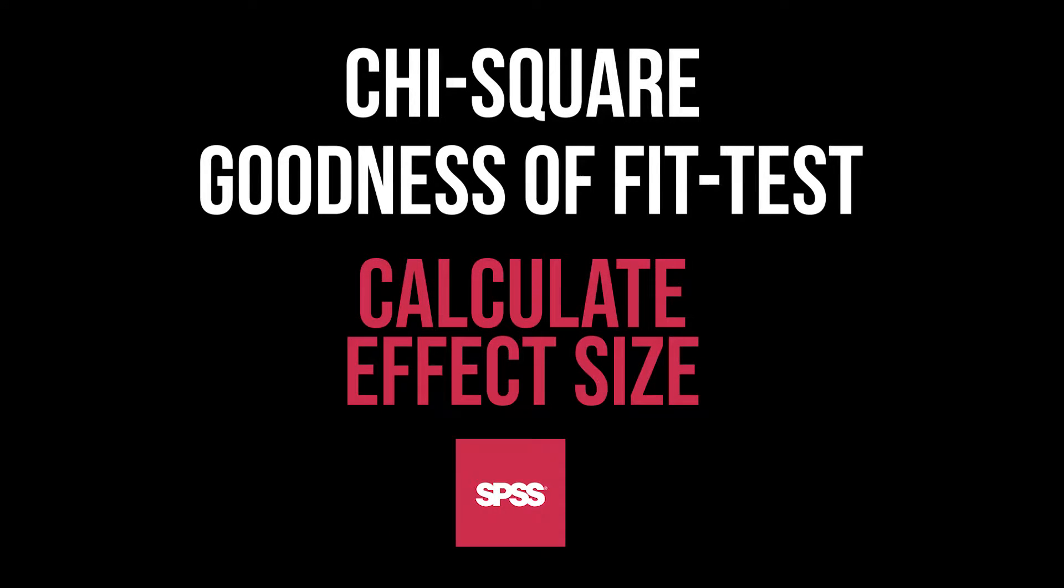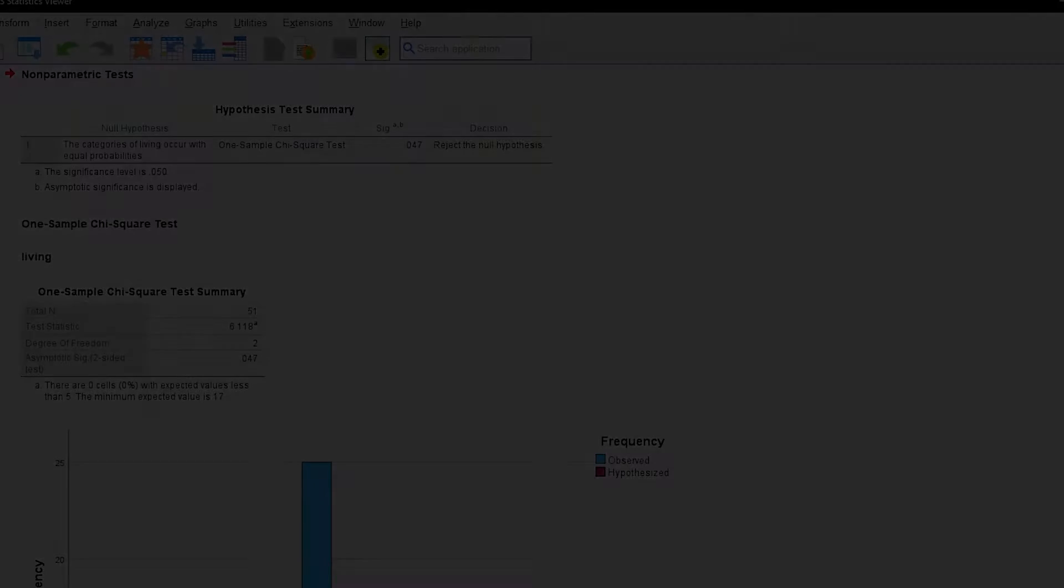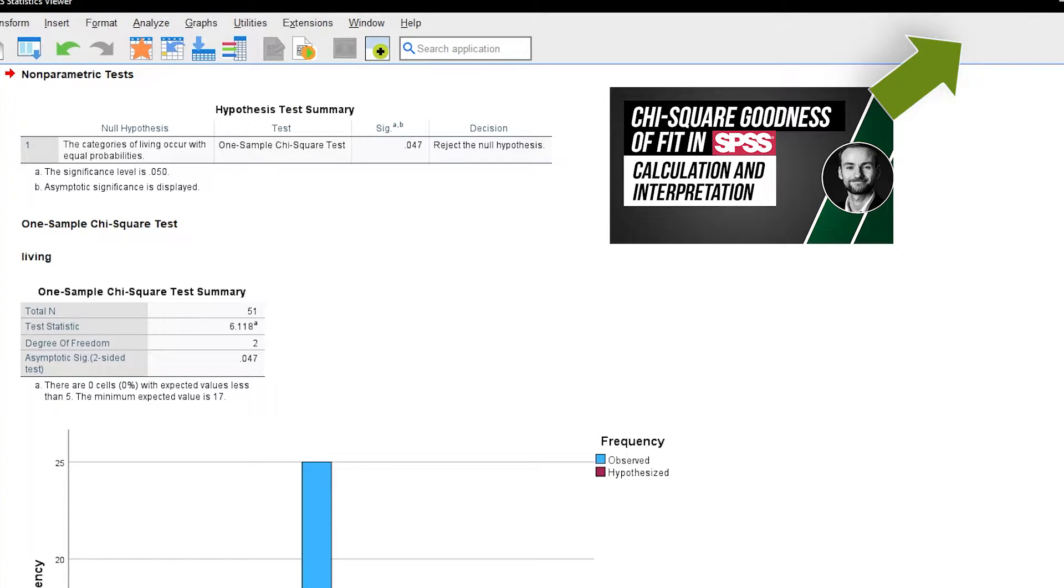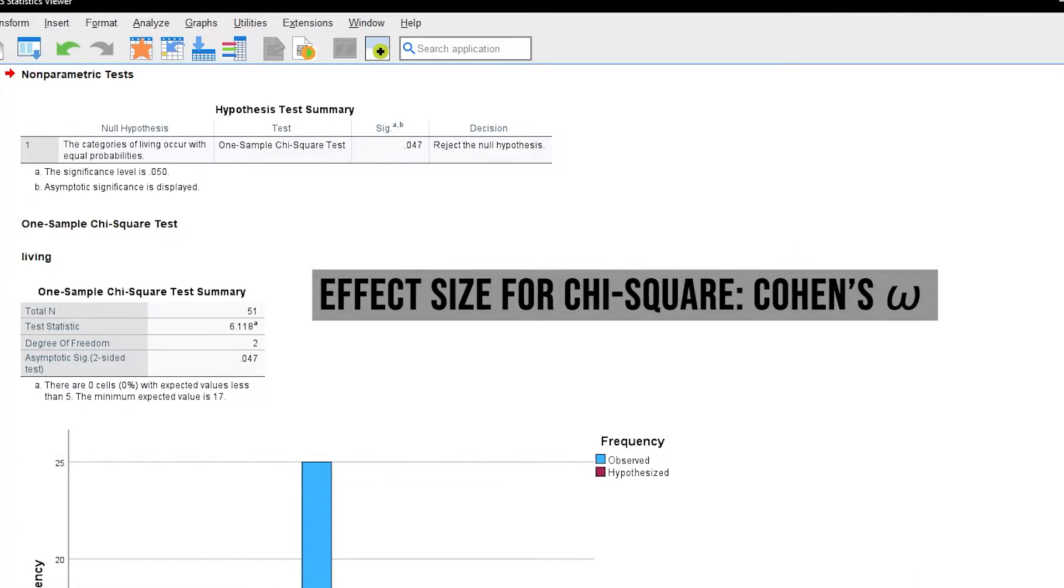This tutorial shows the calculation of the effect size following a significant chi-square goodness of fit test in SPSS. The proper effect size for the chi-square goodness of fit test is Cohen's Omega, sometimes also referred to as Cohen's W because of the similar look.